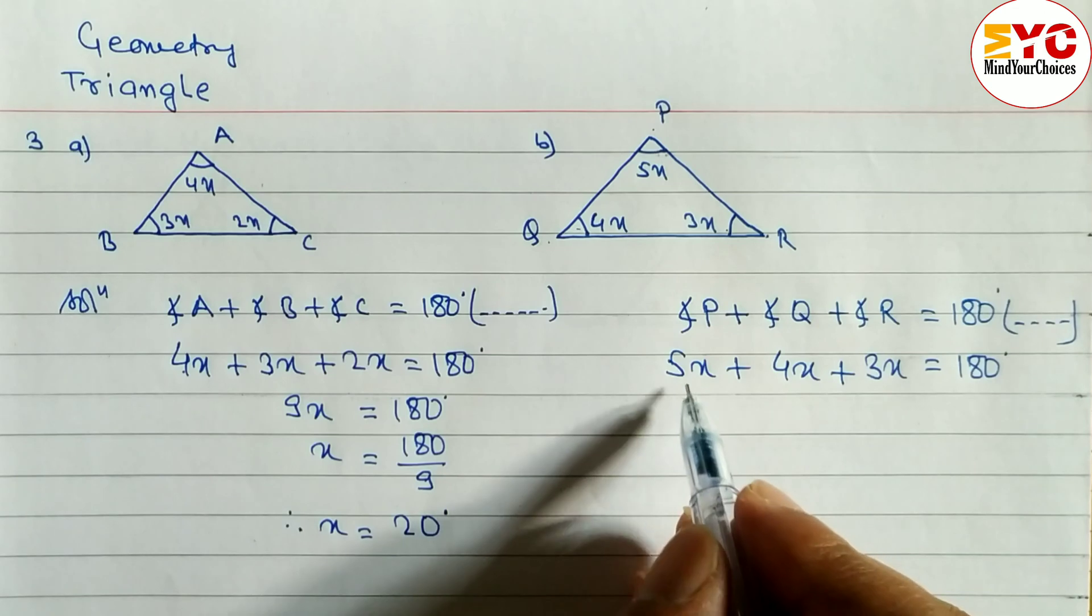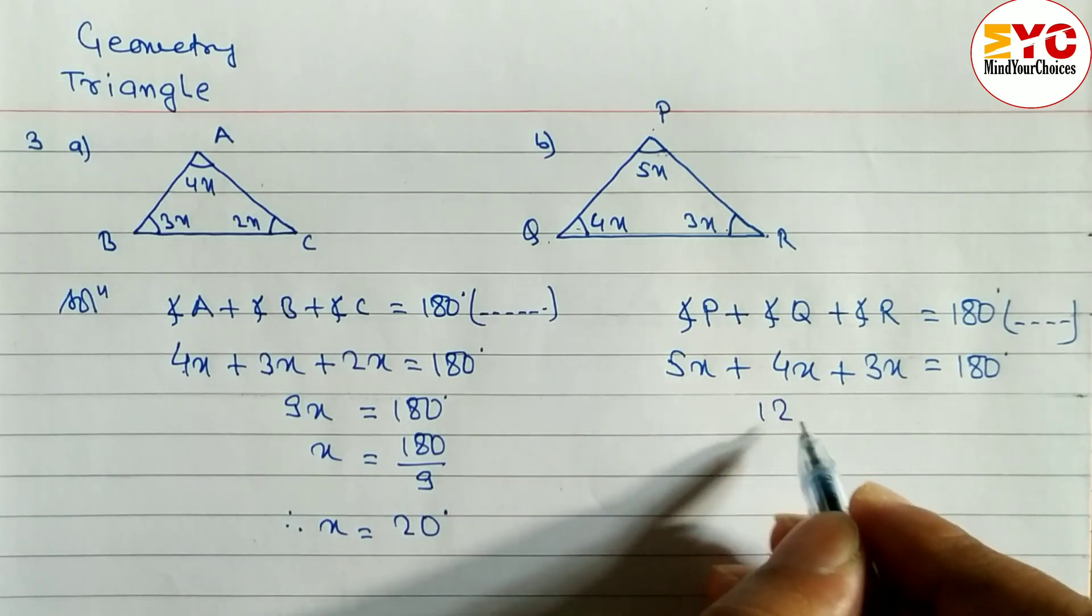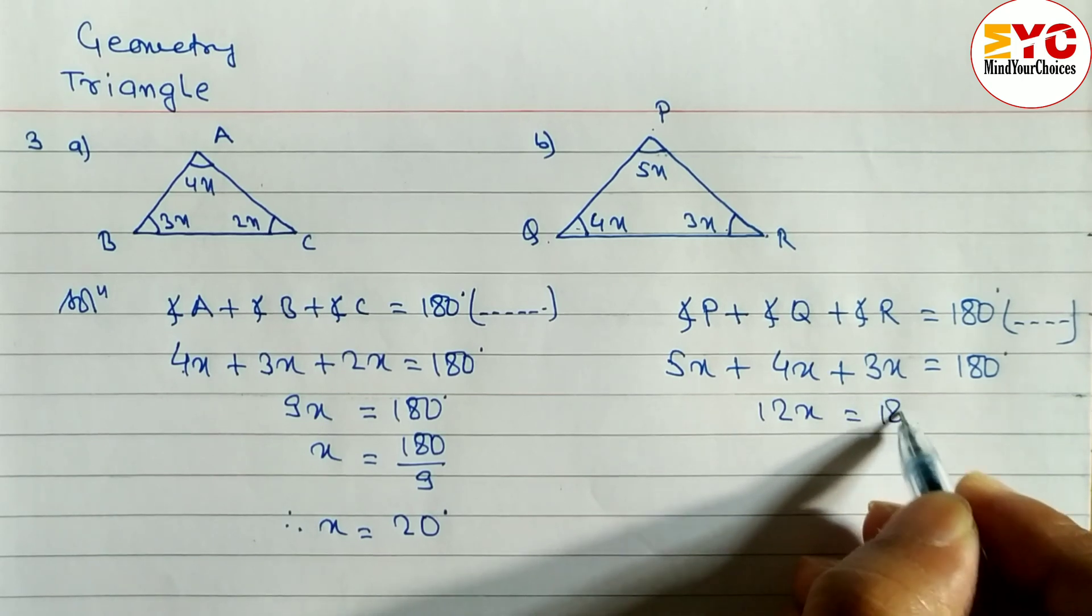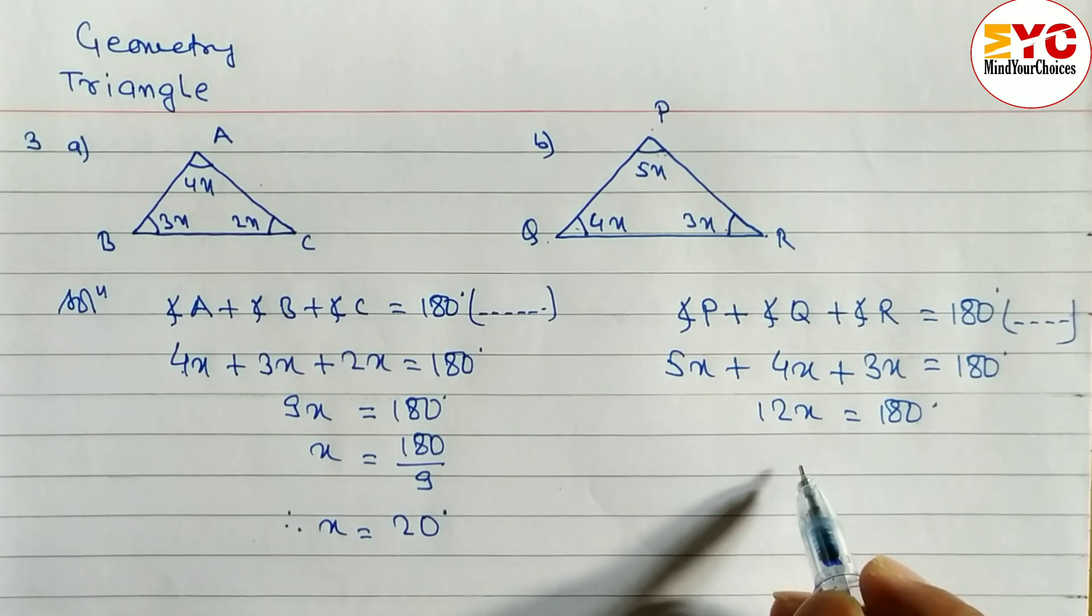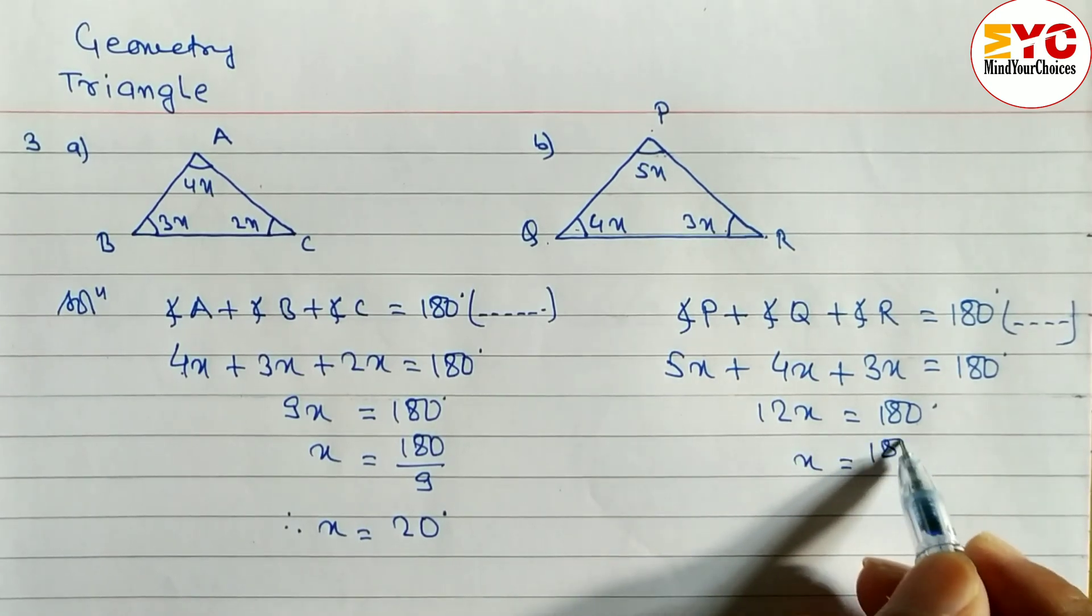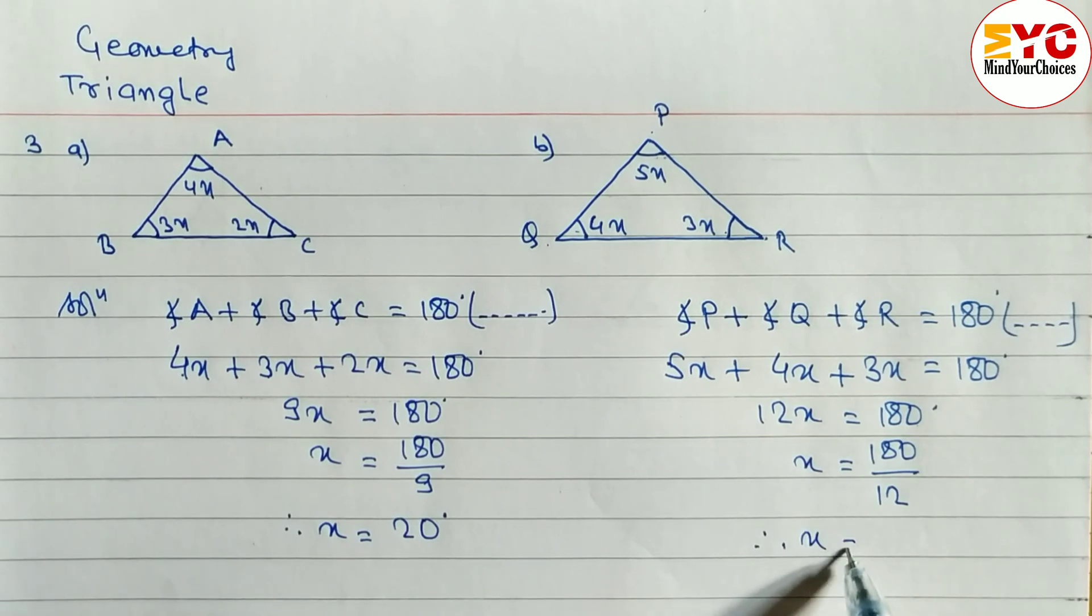Now let's add all 5 plus 4, 9, 9 plus 3, 12. So we have to write here 12x is equal to 180 degrees. Now we have to find out the value of x. You can see there this 12 is in multiplication, so we have to divide. Let's divide.